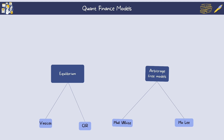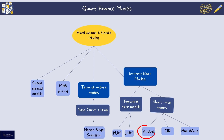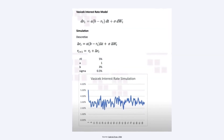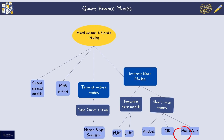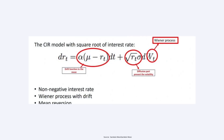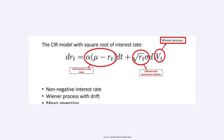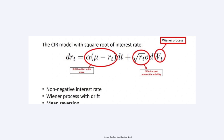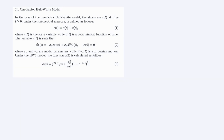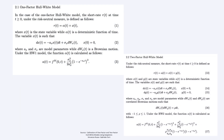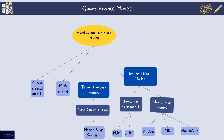Arbitrage-free models include the Hull-White model and the Ho-Lee model. The Vasicek model assumes mean reversion and normally distributed interest rates, allowing for the possibility of negative rates. The CIR (Cox-Ingersoll-Ross) model extends Vasicek to ensure positive interest rates by modeling them as a square root diffusion process. Arbitrage-free models are calibrated to fit current market data — for example, yield curves. The Hull-White model extends Vasicek by allowing time-dependent factors, providing a better fit to the initial term structure.